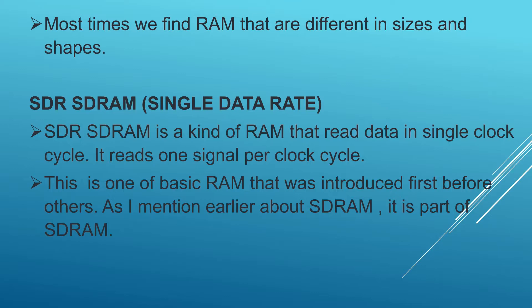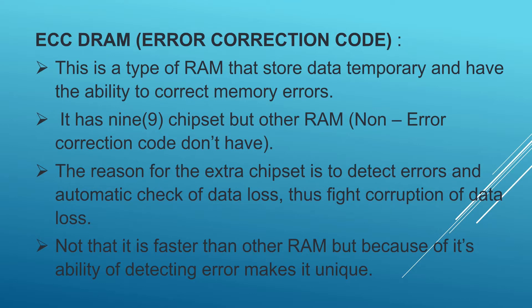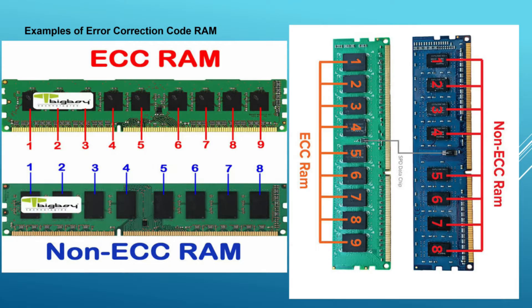Error correction code RAM, also known as ECC dynamic RAM, is a type of RAM that stores data temporarily and has the ability to correct memory errors. It has nine chipsets that non-ECC RAMs don't have. The reason for the extra chipset is to detect errors and automatically check for data loss, thus fighting corruption. It is not faster than other RAMs, but its ability to detect errors makes it unique. On a non-ECC RAM each chip count is always eight, while ECC has nine chips to detect and correct errors.